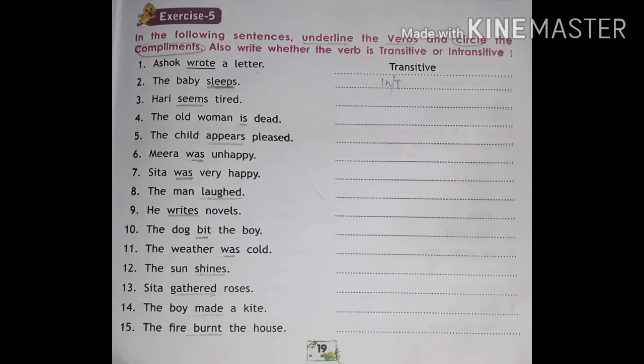In the first sentence: Ashok wrote a letter. Underline 'wrote' — it is a transitive verb, and 'a letter' is the object, so we need not circle it. In the second sentence: the baby sleeps. Underline 'sleeps', but there is no complement, so it is an intransitive verb.